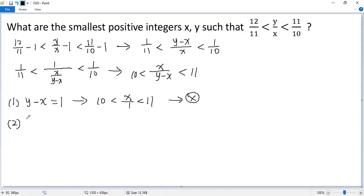Let's look at the second case. y minus x equals 2. Then 10 less than x over 2 less than 11. Oh, we see x must be 21. But in that case, y equals x plus 2. So we get 21 plus 2, 23. So we know the solution: x equals 21.